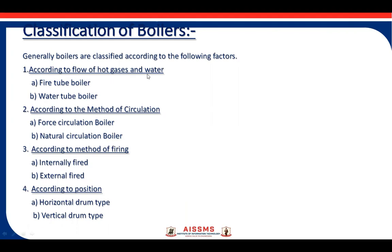The first type is a fire tube boiler and the second is a water tube boiler. In a fire tube boiler, fire flows inside the tube and water surrounds it externally. In a water tube boiler, water flows through the tubes and is externally surrounded by flue gases, due to which water gets converted into steam.